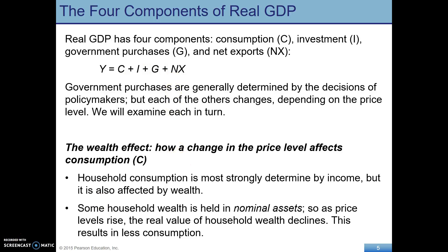In our diagram we have price level on the y-axis. As the price level falls — as there's deflation — that raises the real value of money. So each dollar becomes worth more when there's deflation. That makes consumers wealthier, and that encourages them to spend more. This is the wealth effect, and it is one of the reasons the aggregate demand curve slopes downward.